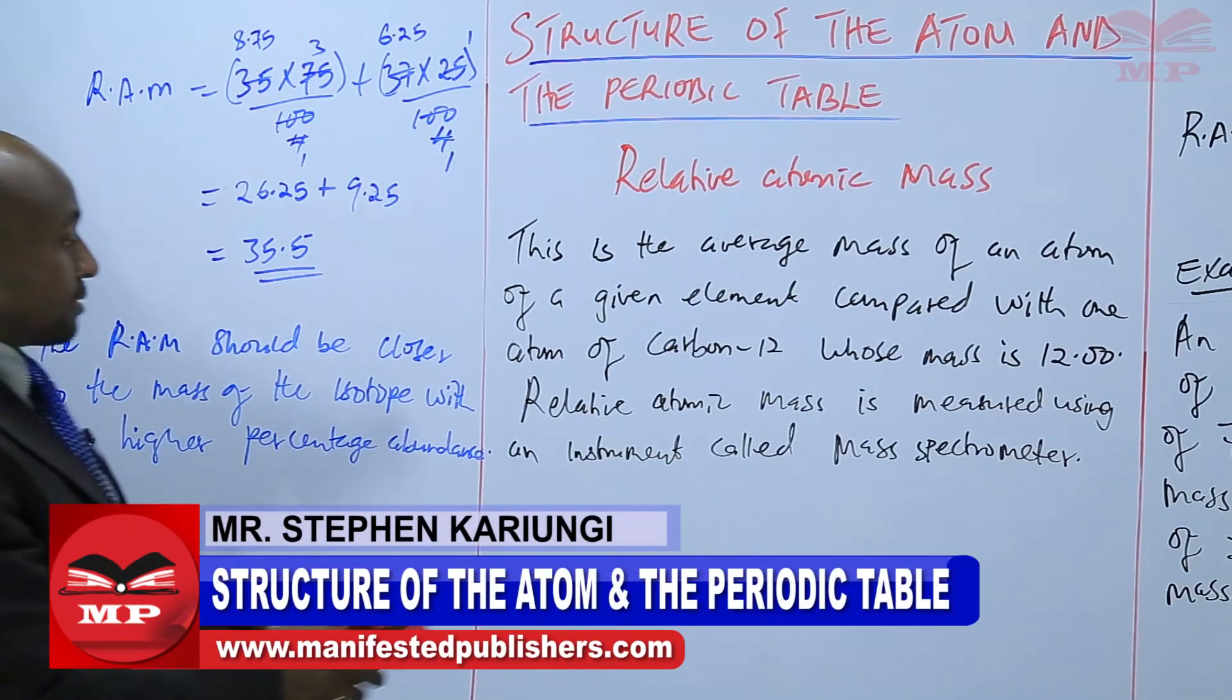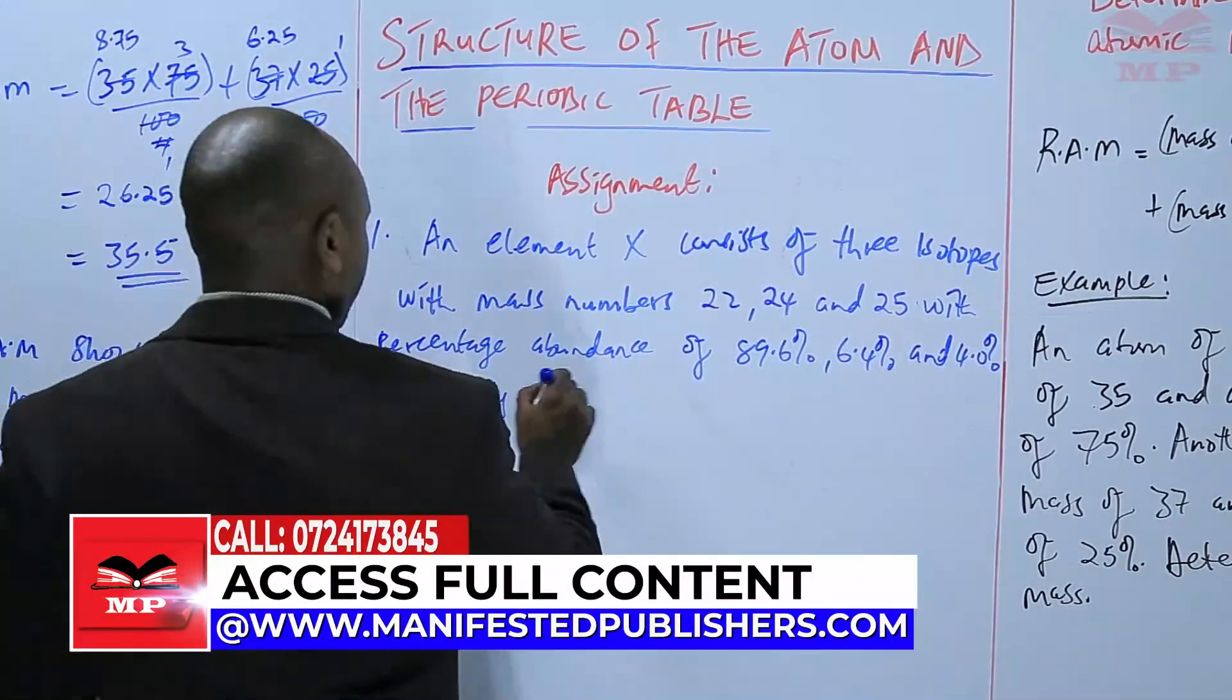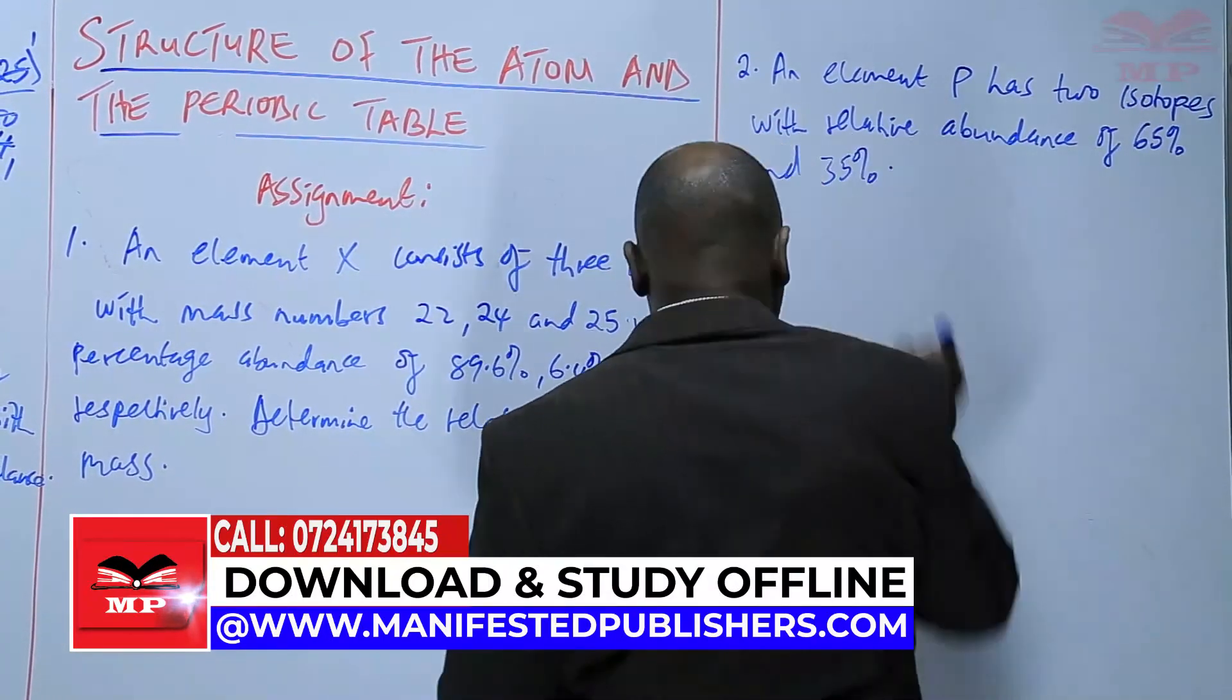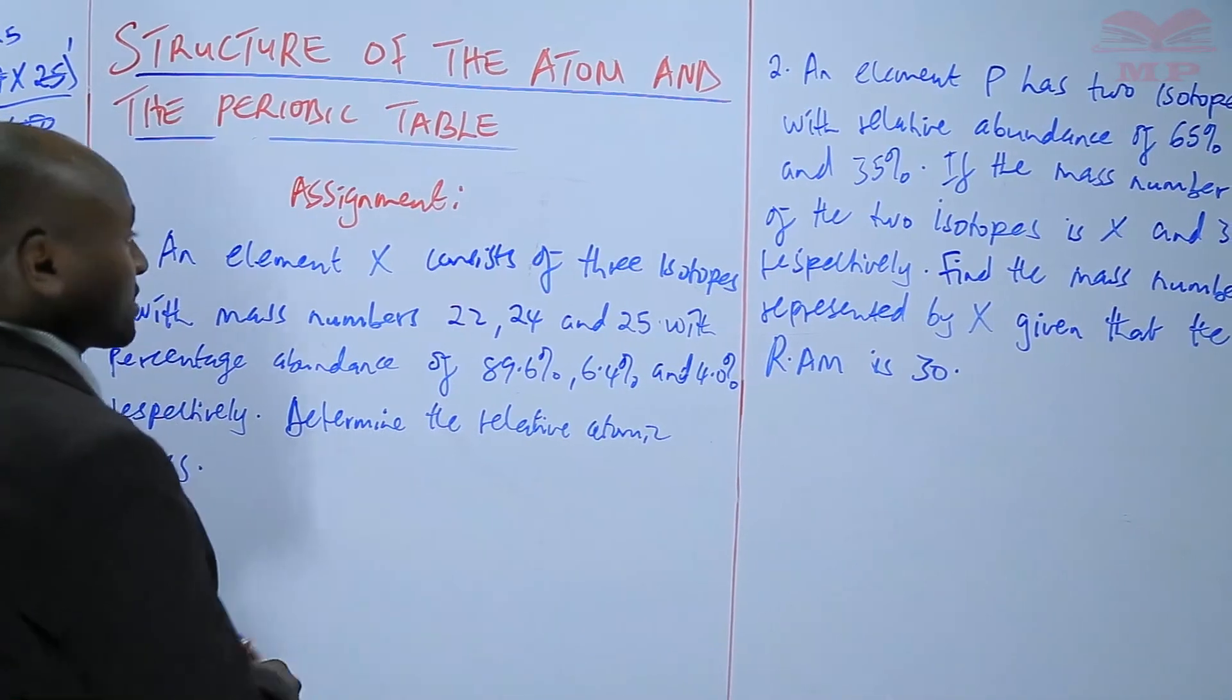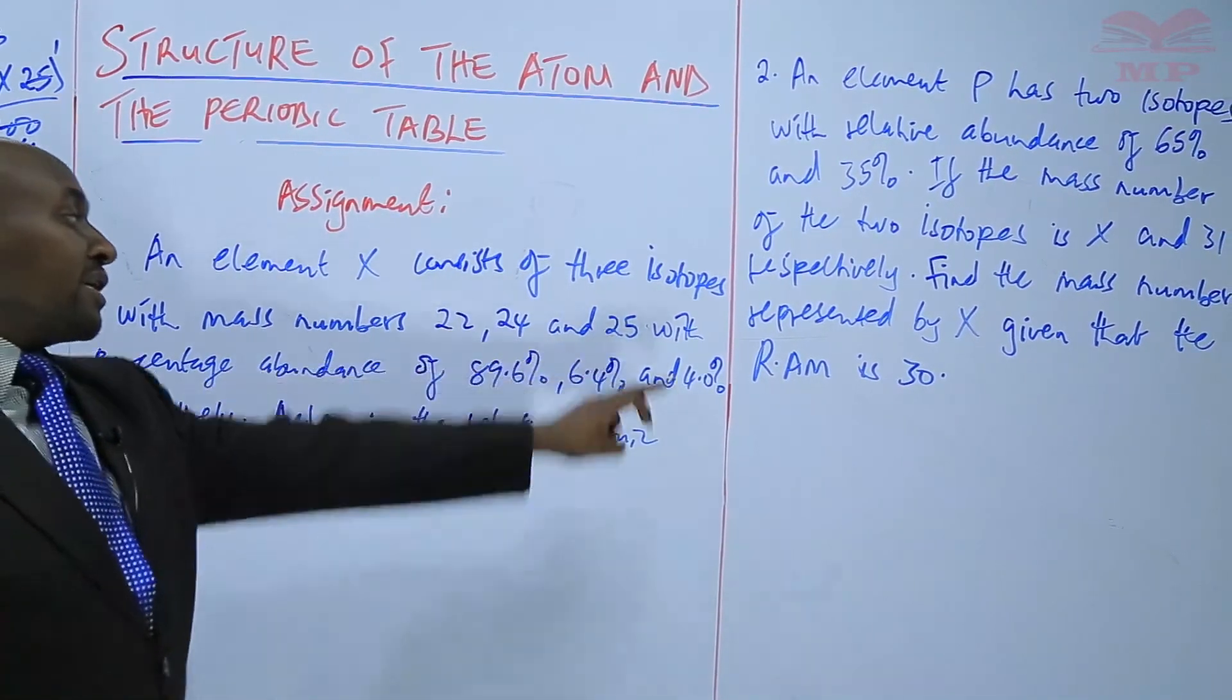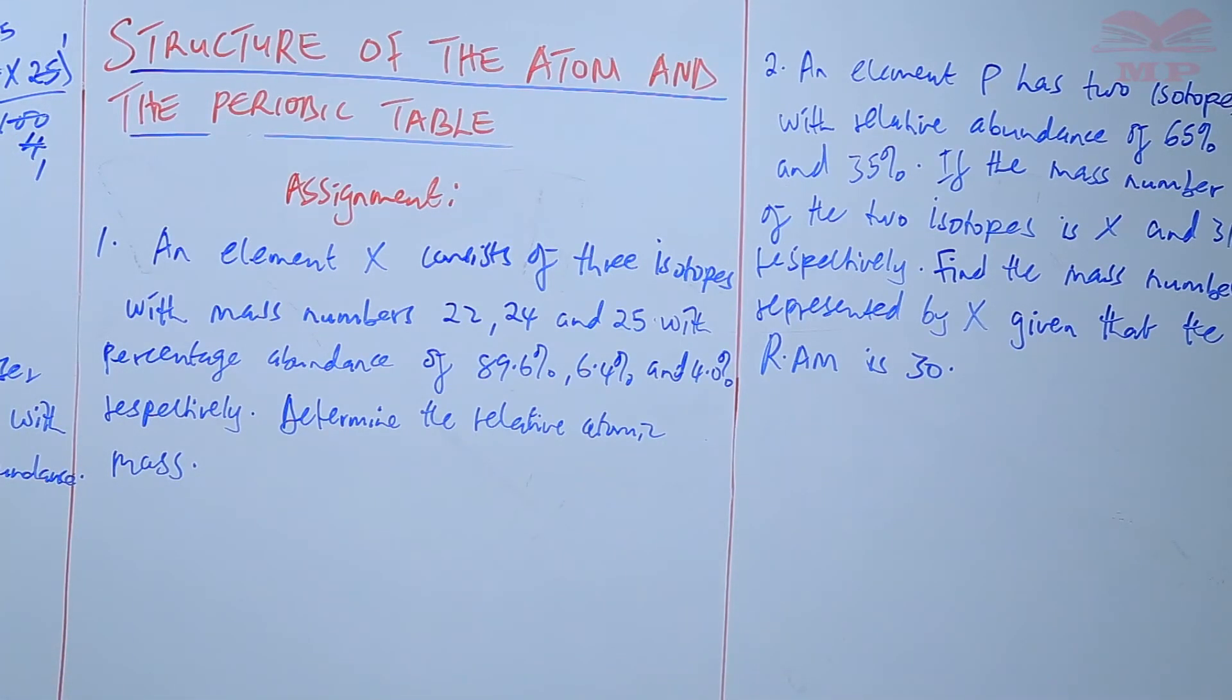So, we're going to have an assignment based on this. The first question in the assignment: an element X consists of three isotopes with mass numbers 22, 24 and 25 and percentage abundances of 89.6, 6.4 and 4.0. Determine the relative atomic mass.